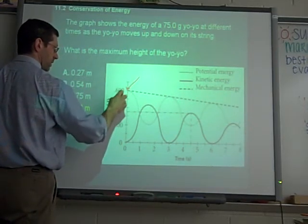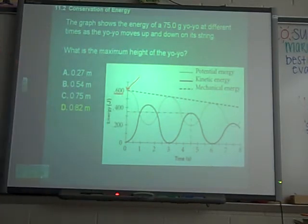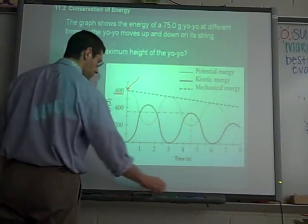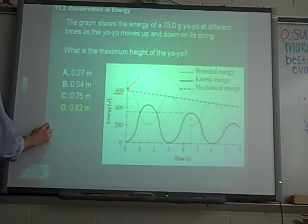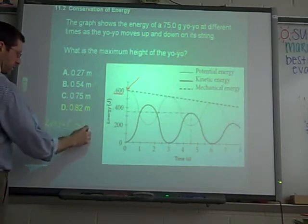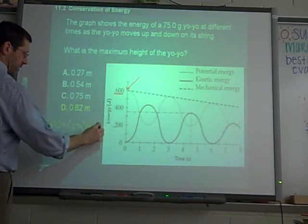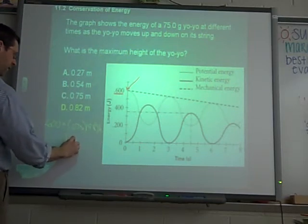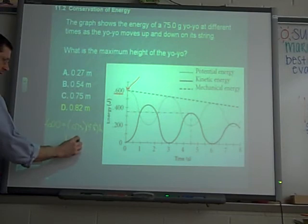So the potential energy is highest at that value. Potential energy is mgh, so 0.600 joules equals mgh. Again working with 0.075 kilograms times 9.8 times h, solve for h. That means it's 0.82 meters.